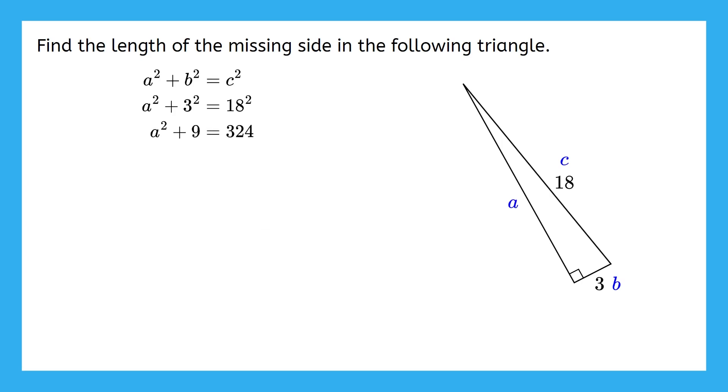This time, we'll subtract 9 from both sides, since we're trying to get this variable by itself. The only problem now is that the variable is still being squared, so just like in the previous problem, we have to take the square root of both sides.